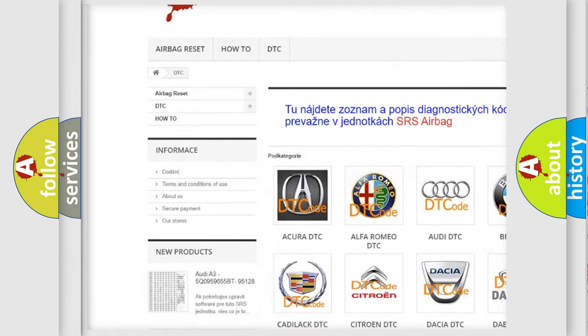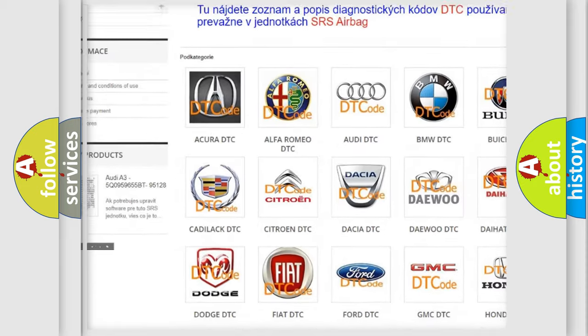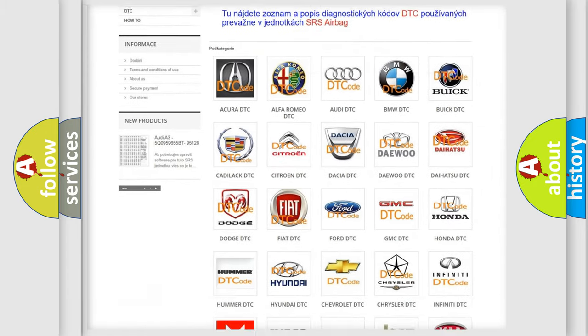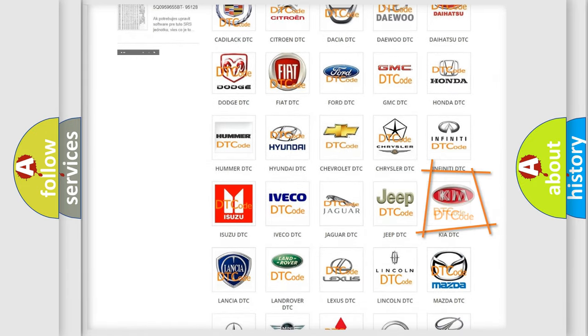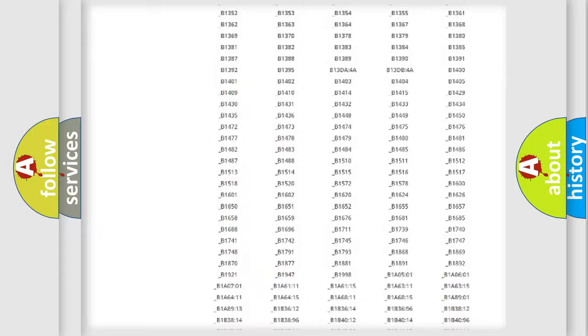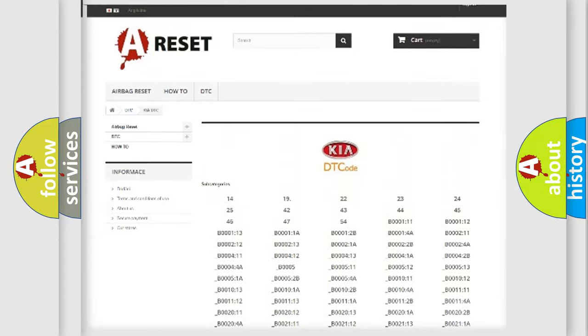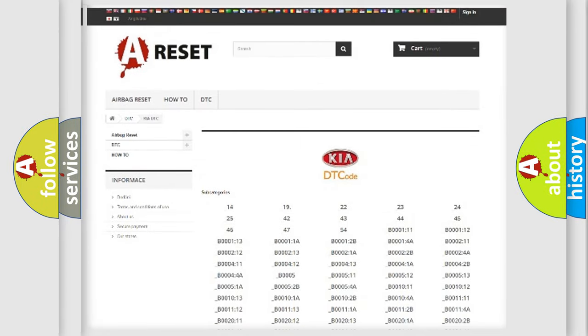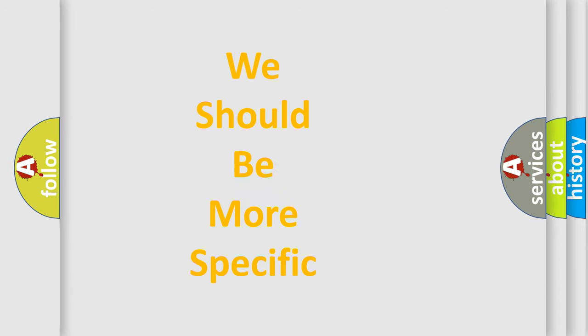Our website airbagreset.sk produces useful videos for you. You do not have to go through the OBD2 protocol anymore to know how to troubleshoot any car breakdown. You will find all the diagnostic codes that can be diagnosed in KIA vehicles, and many other useful things. The following demonstration will help you look into the world of software for car control units.